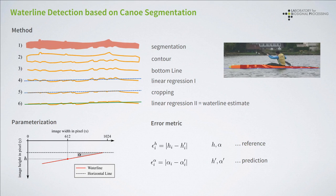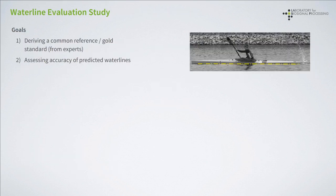Unlike a classification task, where the result is either true or false, waterline detection is a regression problem for which no accurate reference exists or can be measured. In fact, the detection of a waterline — the boundary that separates the visible part of the canoe from the part below the water surface — is subject to individual perception, and as a result, multiple solutions might be accepted as a valid prediction. Hence, we carried out an evaluation study with human experts in the field of kinematic parameter analysis, to define the ground truth reference and to assess the performance of our waterline prediction method with respect to expert annotations.